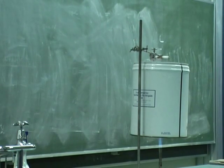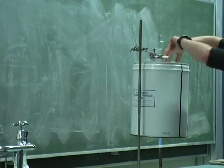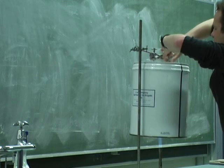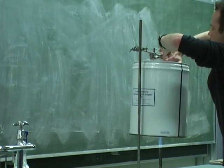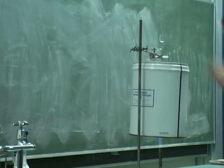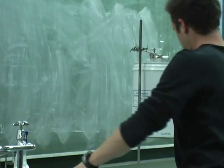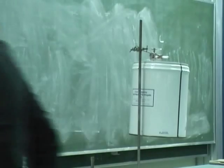So we've now got a can boiling water full of steam and what we do is we seal up the can. And turn off the heat, that's the important part.